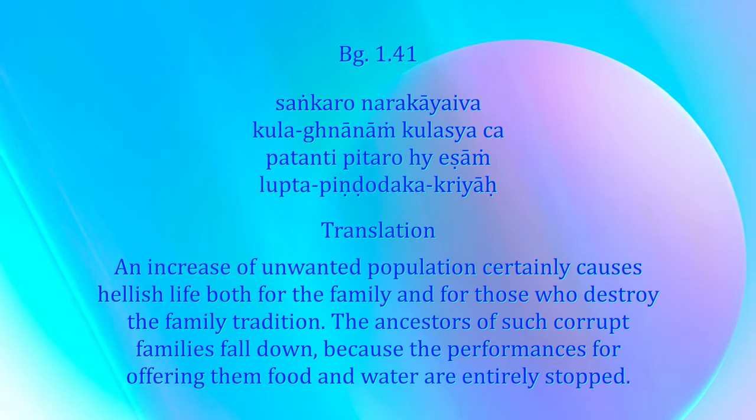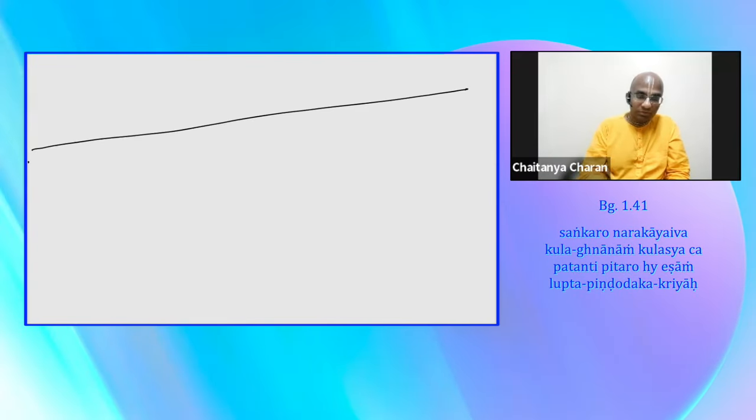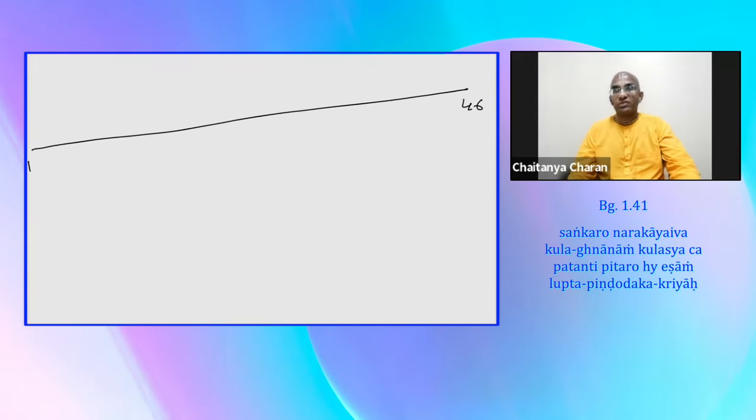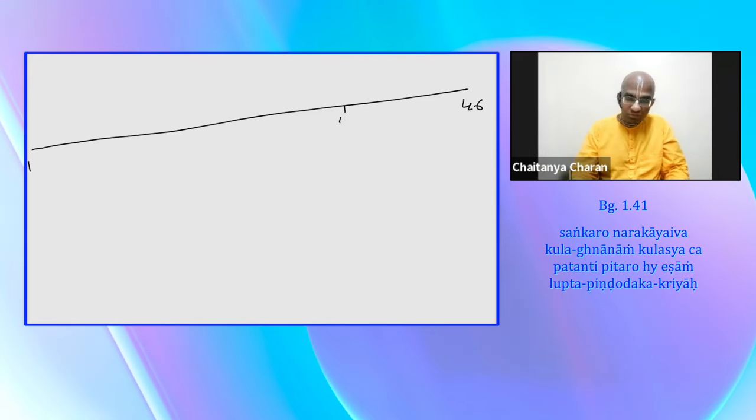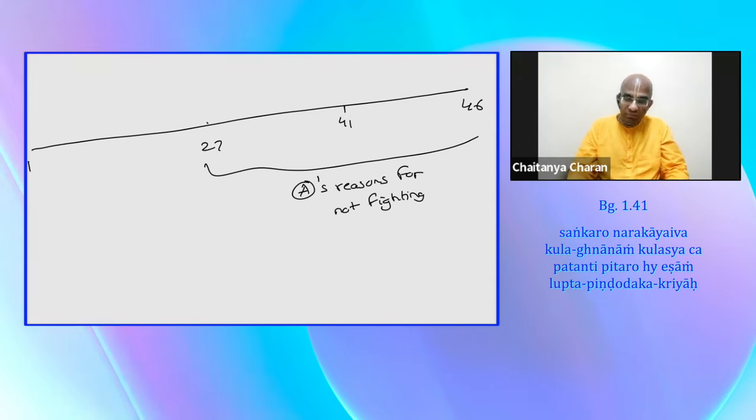In this particular section of the Bhagavad Gita, which is almost toward the last part of the first chapter, the first chapter has 46 texts, and we are in the 41st. Overall, Arjuna from the 27th text onwards is giving his reasons for not fighting. Some of those reasons we can relate with immediately, and some of those reasons are coming from a particular worldview that he was inhabiting at that particular time.